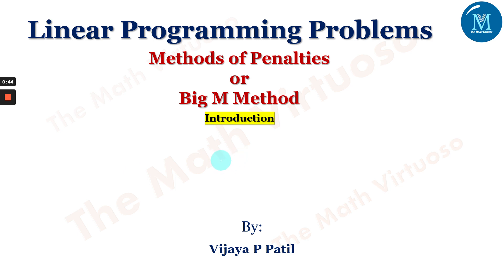Artificial variables have no meaning in the physical sense and are not used as a tool for generating an initial solution to the LP problem. Before the optimal solution is reached, all artificial variables must be dropped out from the solution mix. This is done by assigning appropriate coefficients to the variables in the objective function. These variables are added to constraints with equality or greater-than-or-equal-to signs. Now let us introduce the method of penalties and Big M method in detail.